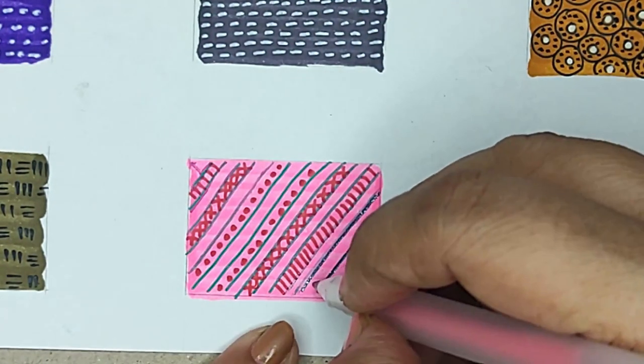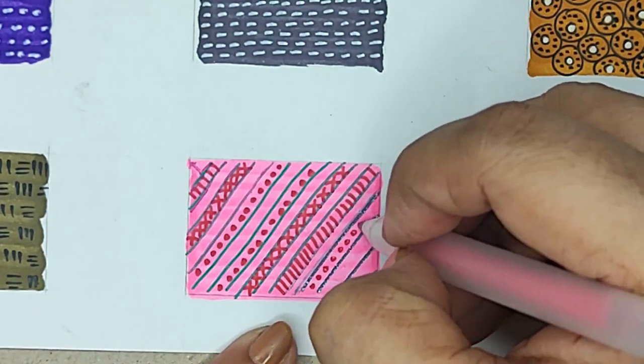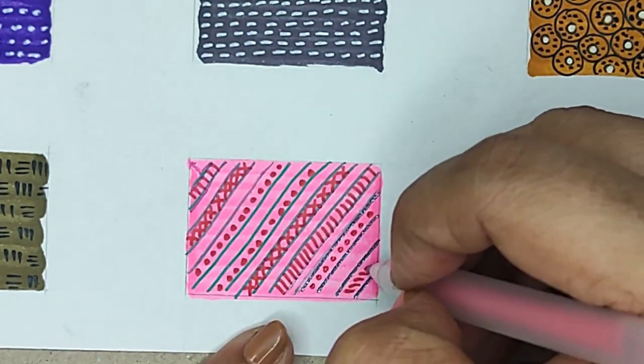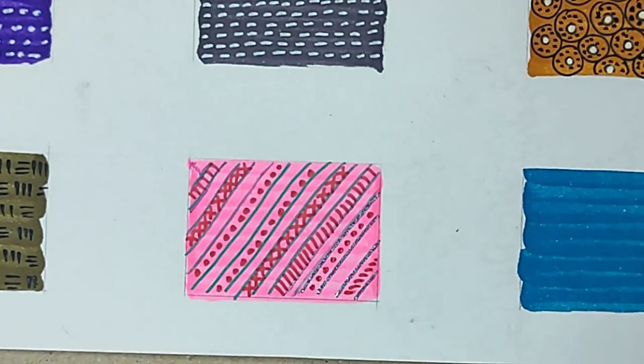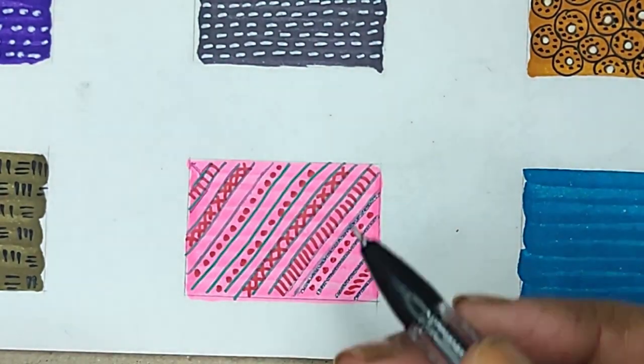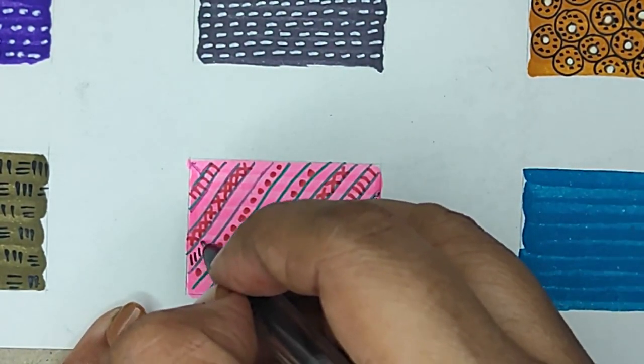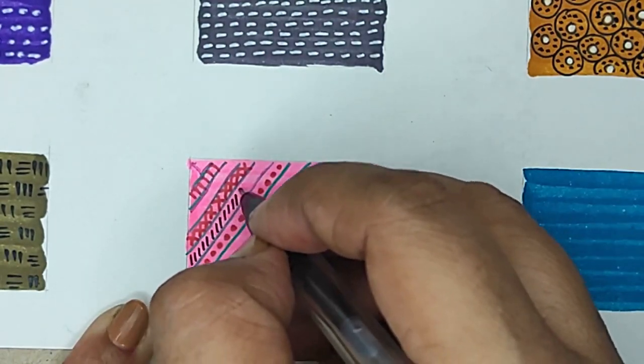So here, in this swatch I am just showing you very simple patterns, all criss-cross lines. These you can just use according to your imagination wherever required. But the patterns are very simple.